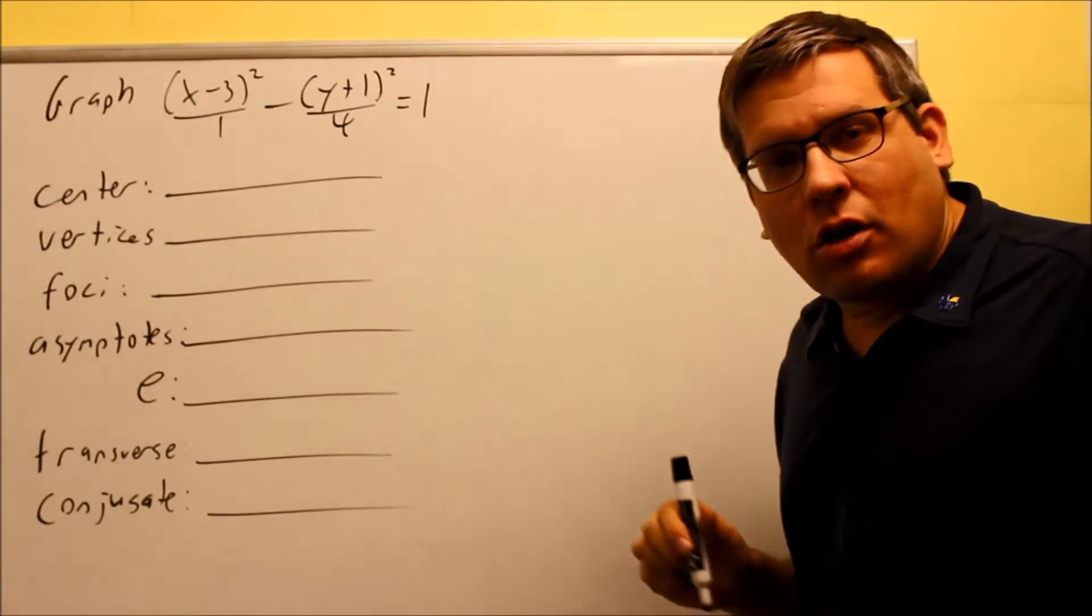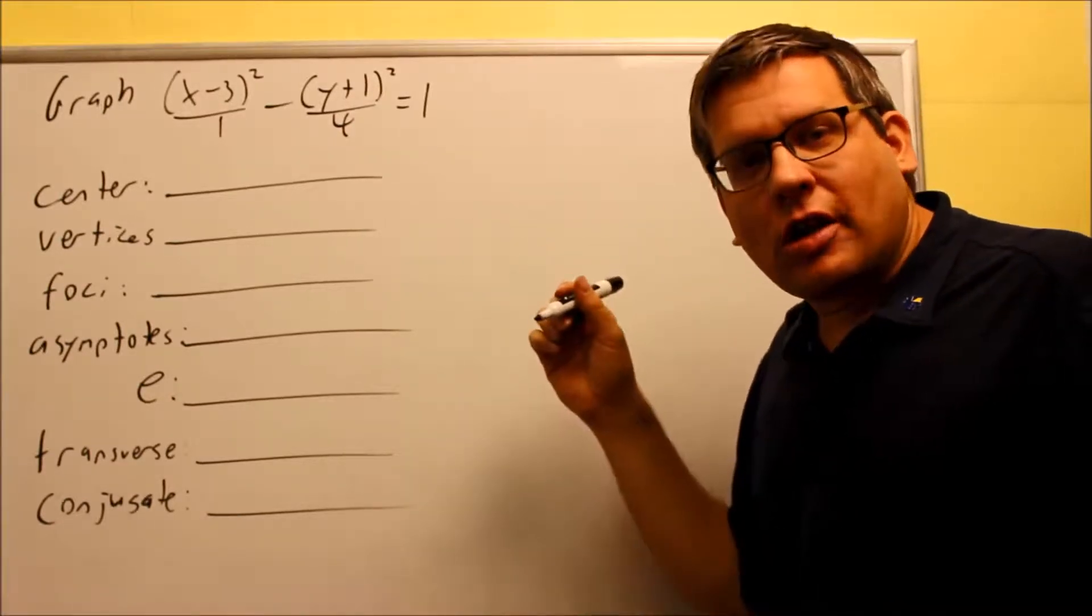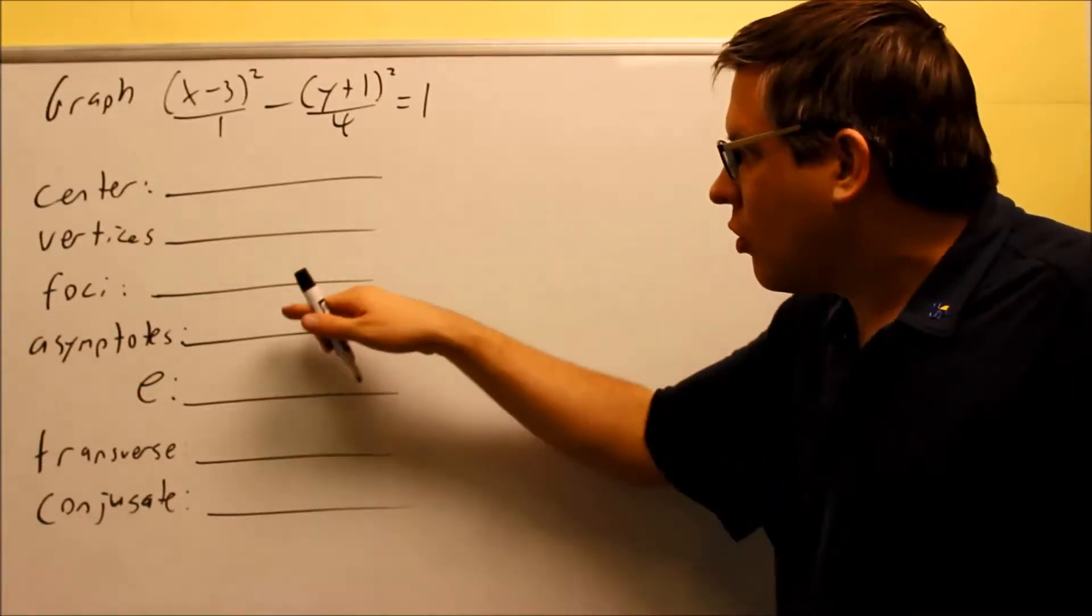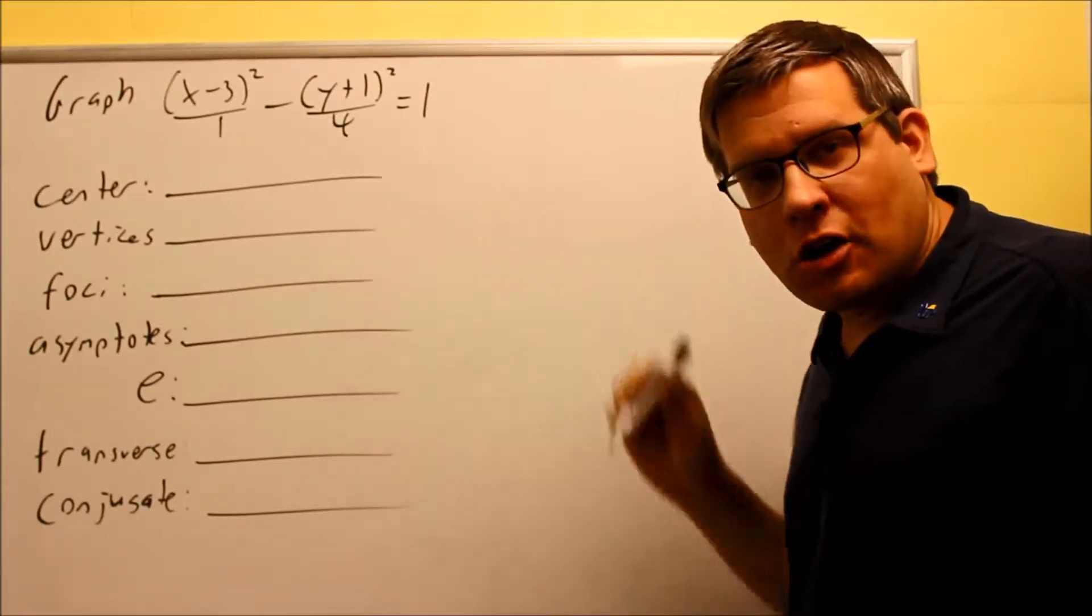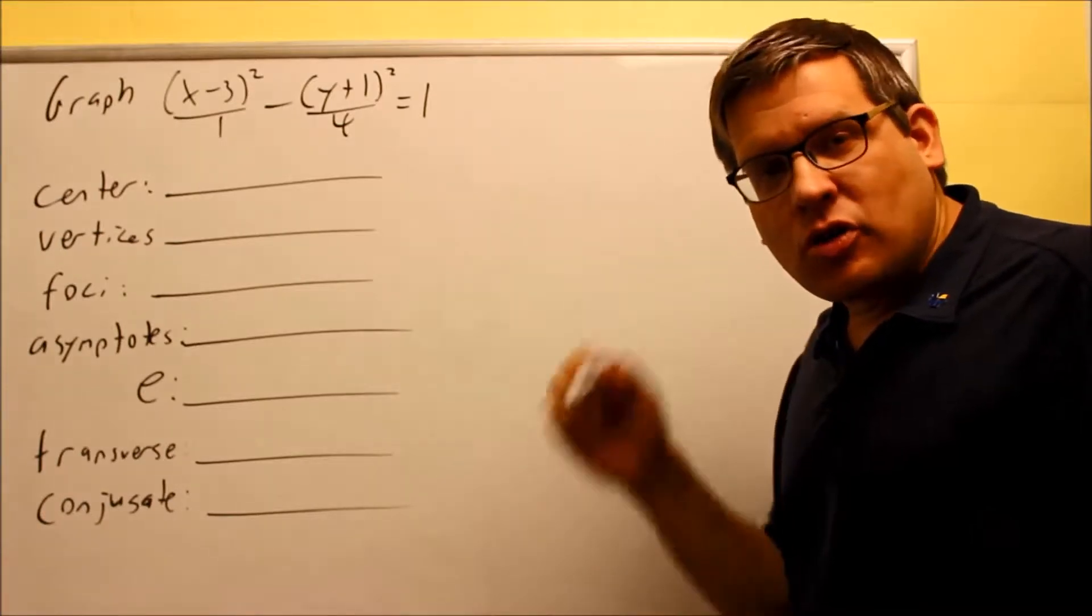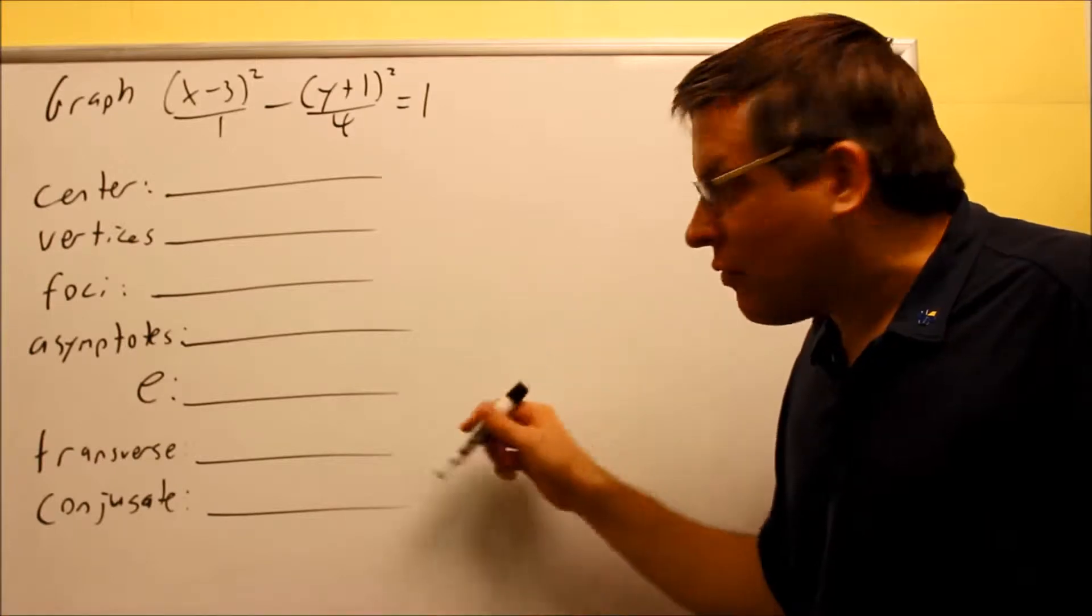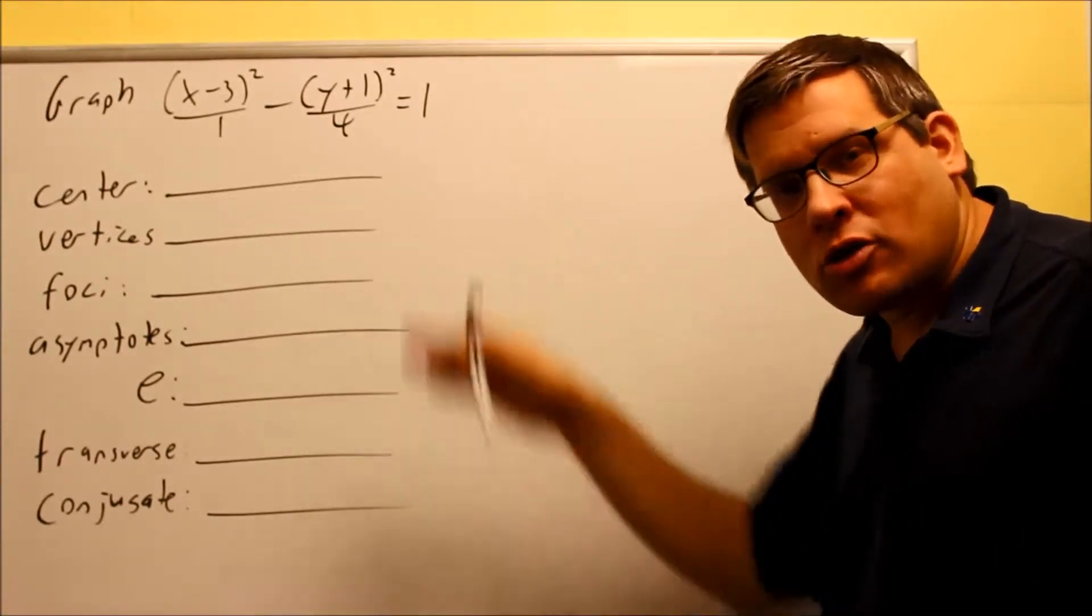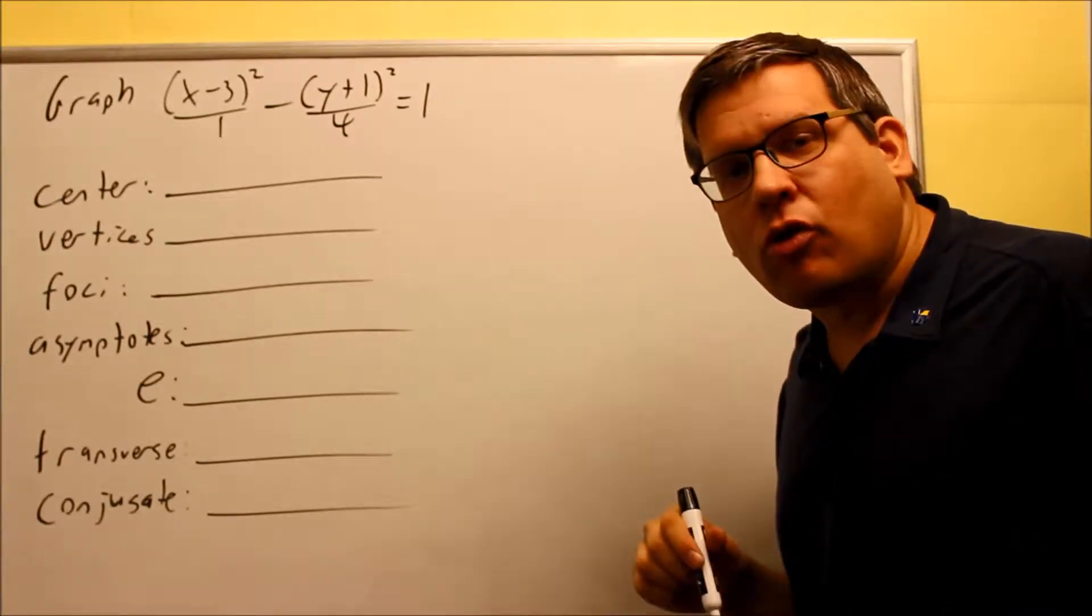So in the notes, again, I have hyperbolas drawn centered at H, K that open up and open down. There's a list of formulas, particularly the ones that we're going to look at are the ones for the asymptotes. For the foci and the vertices, we are going to get those off the graph as usual. However, asymptotes have special formulas that are actually in those notes. So you want to be familiar with that because we're going to be using that formula here.